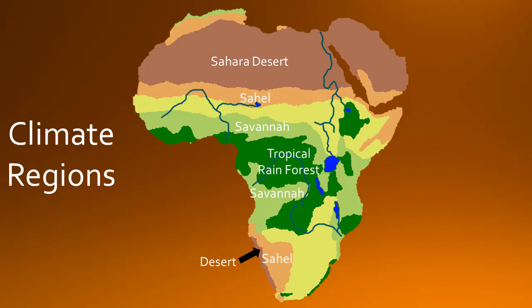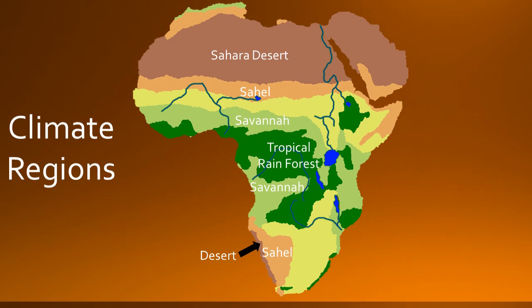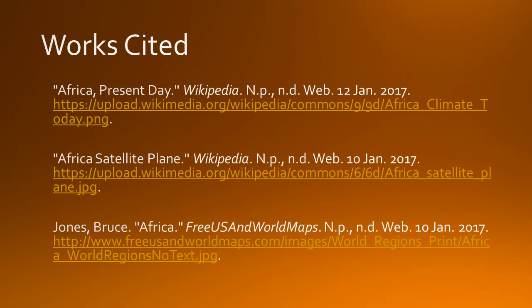Last, we have the tropical rainforest. It is located in central Africa and a variety of animals live in this region. The forest has shrunk because of deforestation.